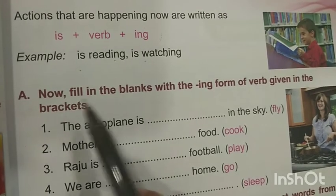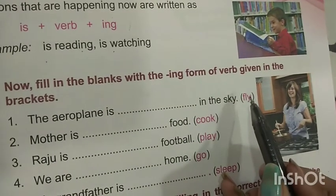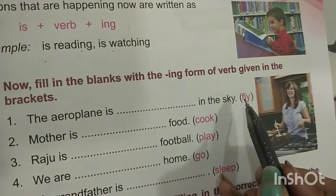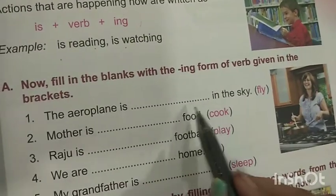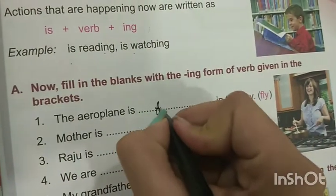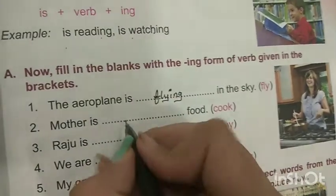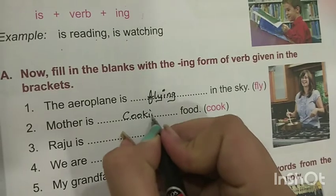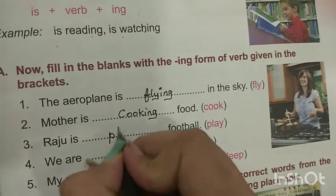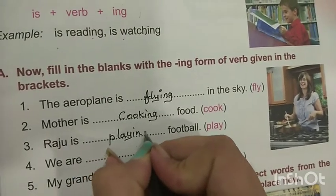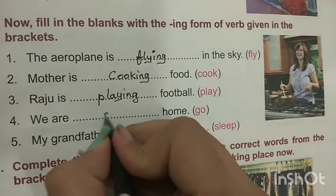Exercise A: Fill in the blanks with the ing form of the verbs given in the bracket. We have to add the ing form to the words. The aeroplane is flying in the sky. Mother is cooking food. Raju is playing football. We are going home.